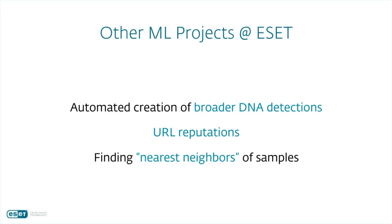We also had other projects that were using machine learning for creation of broader DNA detections, URL reputations, and also for finding nearest neighbors of samples. Many of those are still working in our solution, while for some there are other new systems that are more effective. So we are trying to innovate in other regions too, not just in machine learning.